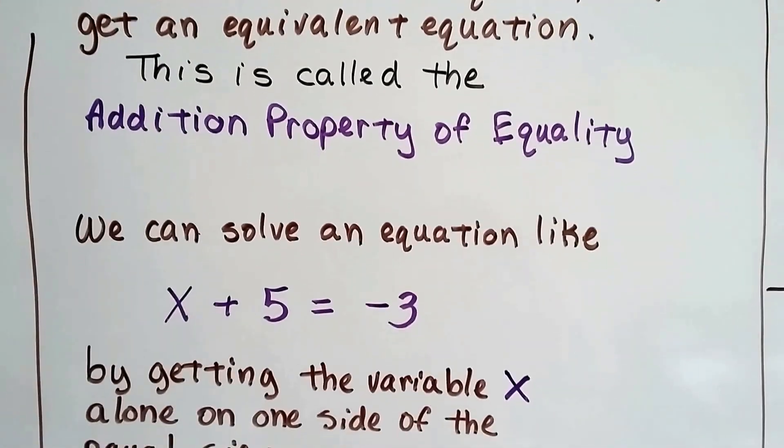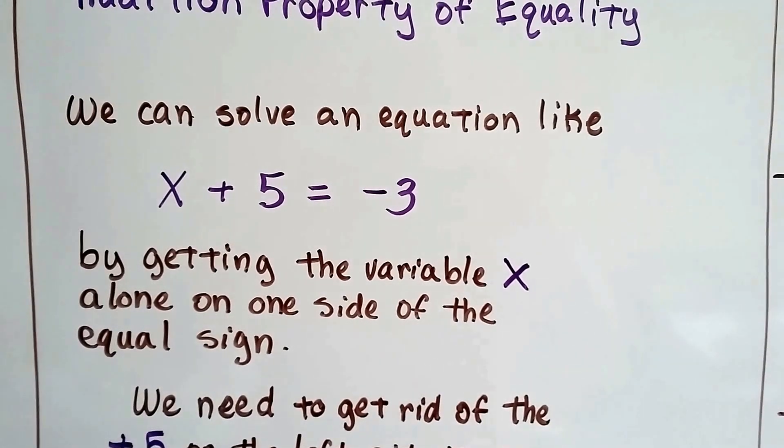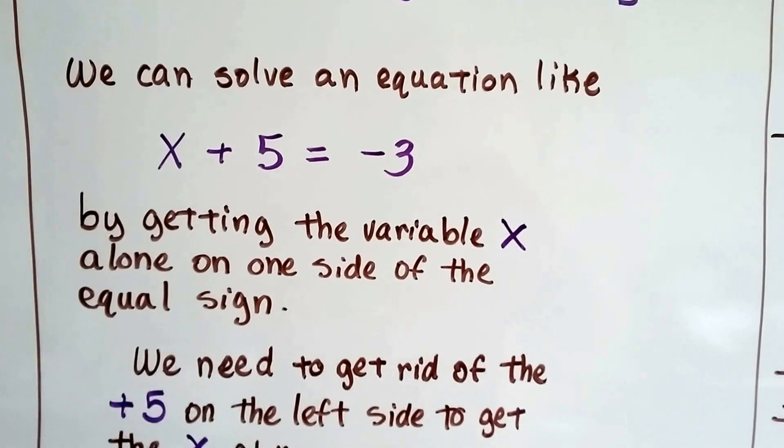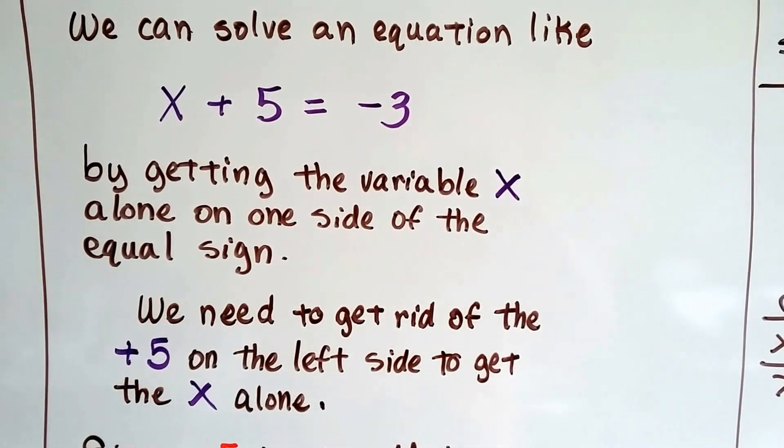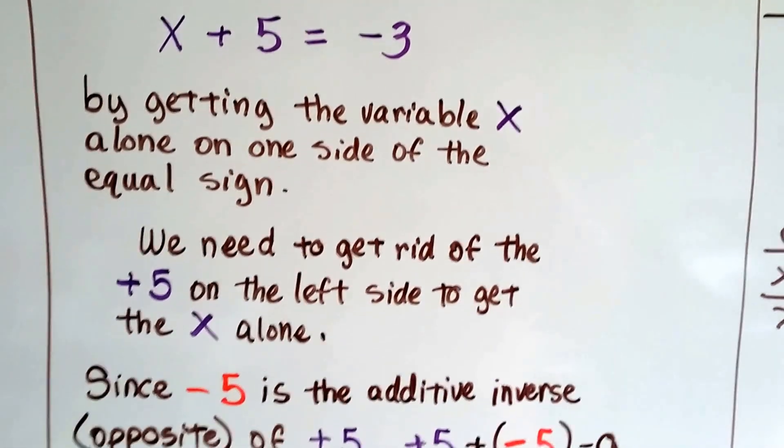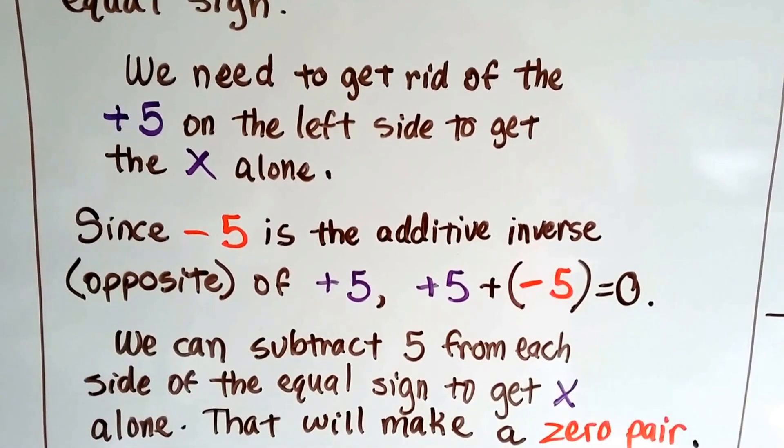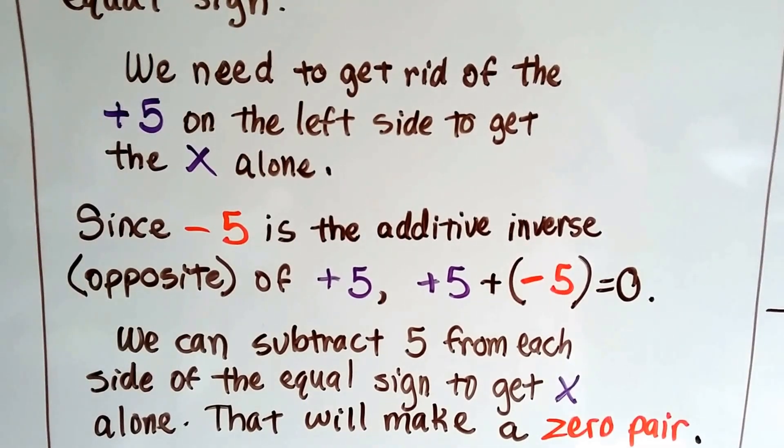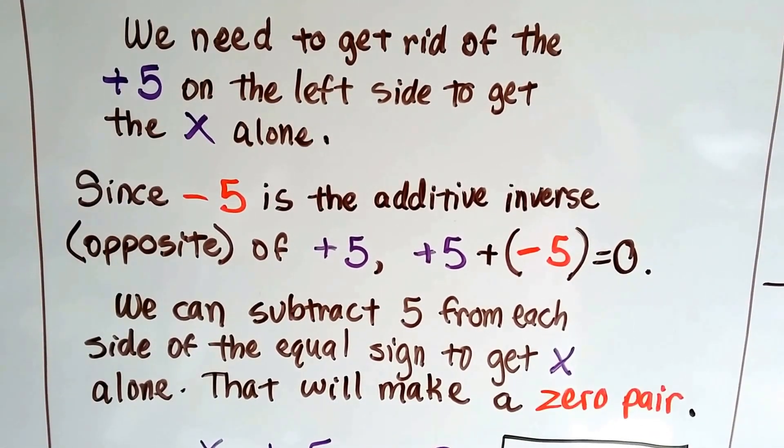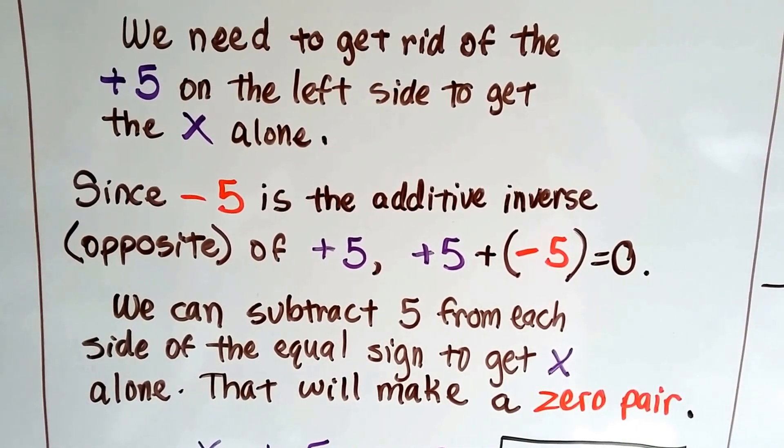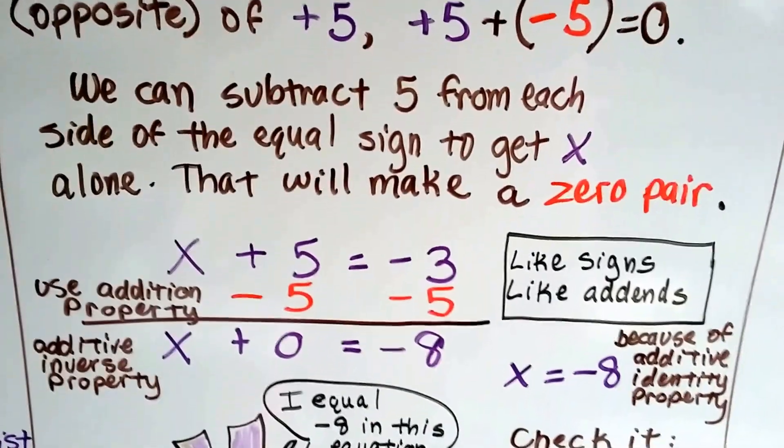We can solve an equation like x plus 5 equals negative 3 by getting the variable x alone on one side of the equal sign. We want to get it by itself. And we need to get rid of that plus 5 on the left side to get the x alone, don't we? Well, since minus 5 is the additive inverse, the opposite of a plus 5, plus 5 plus a minus 5 is going to get a zero. We can subtract that positive 5 from each side of the equal sign to get x alone, and it'll make a zero pair.